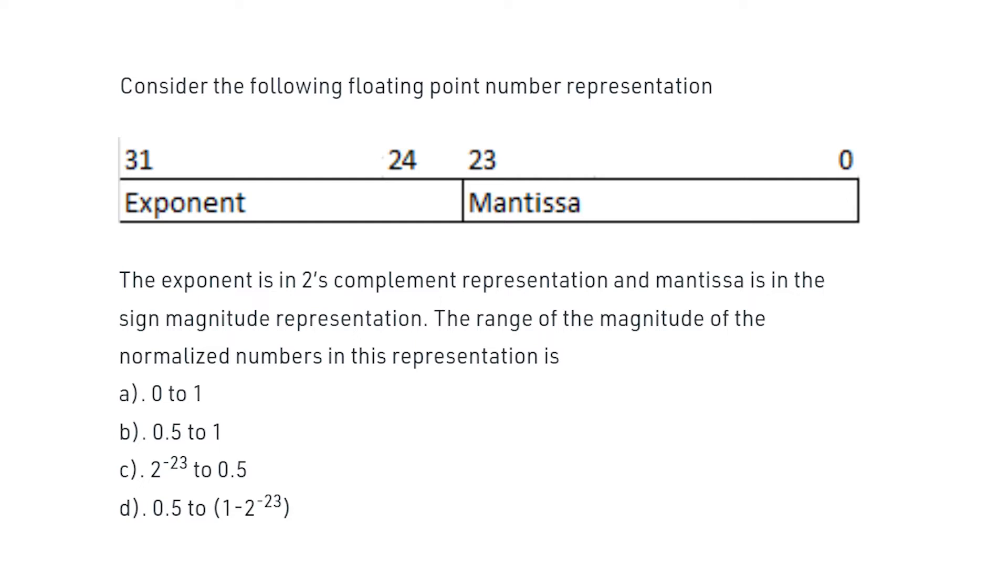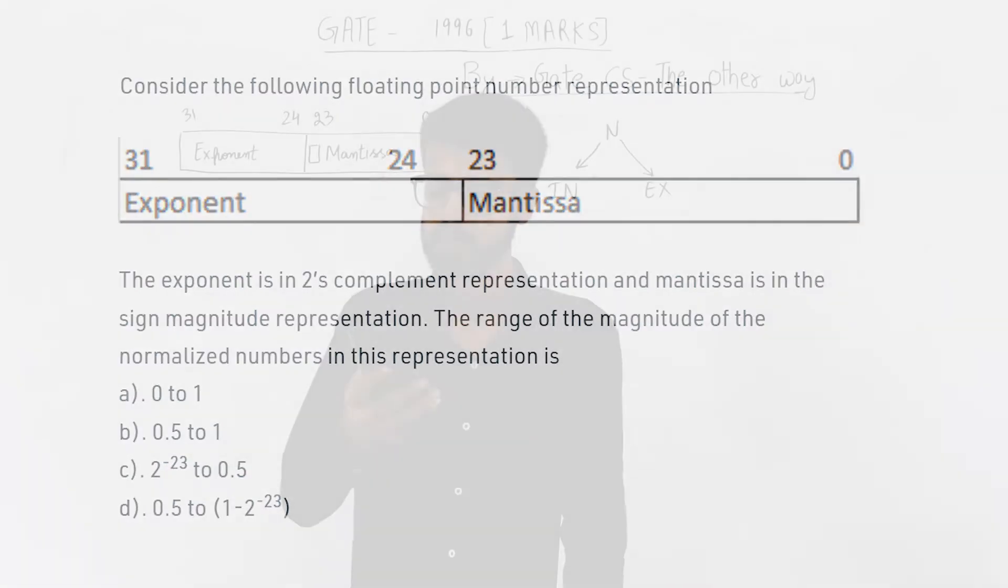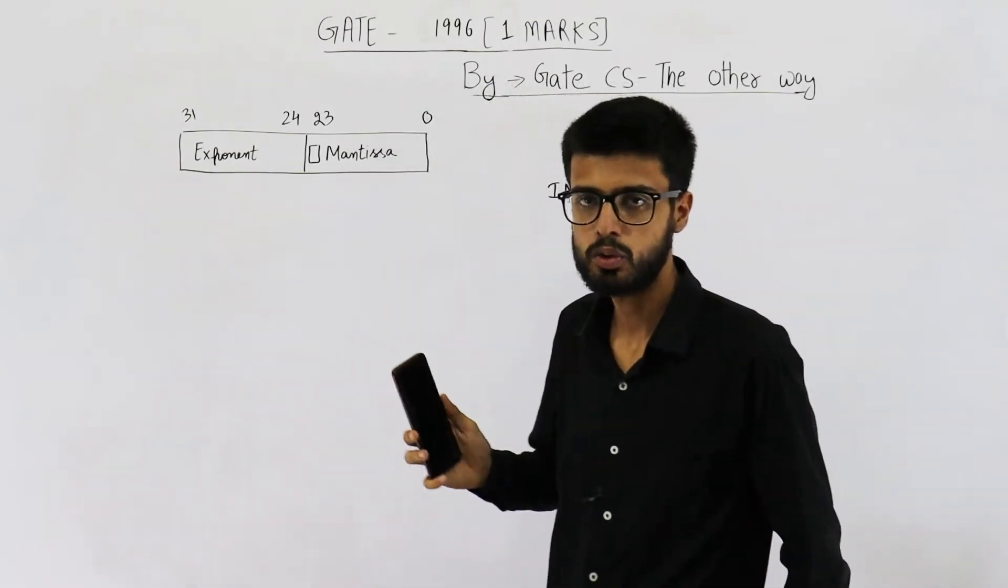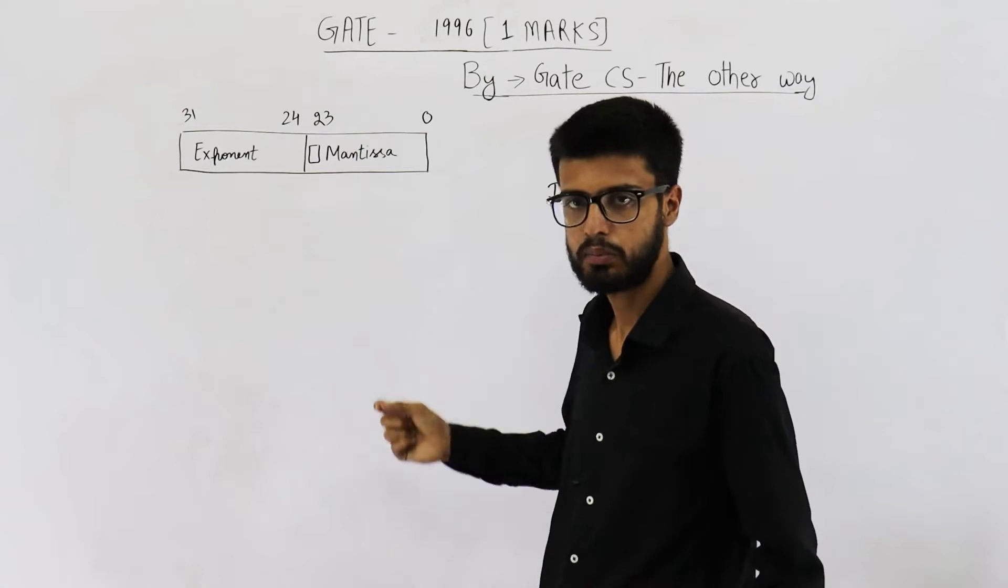The exponent is in 2's complement representation and the mantissa is in sign magnitude representation. The range of magnitude of the normalized number in this representation is - they are asking about range of magnitude of normalized number.